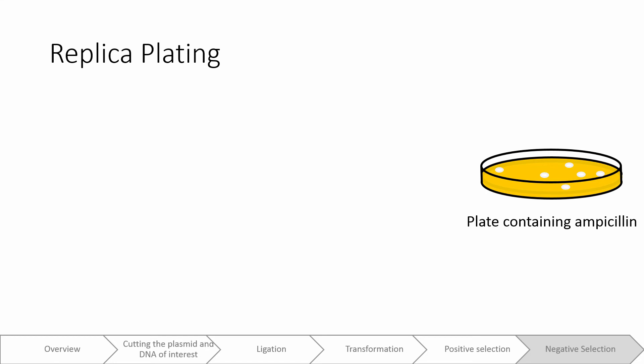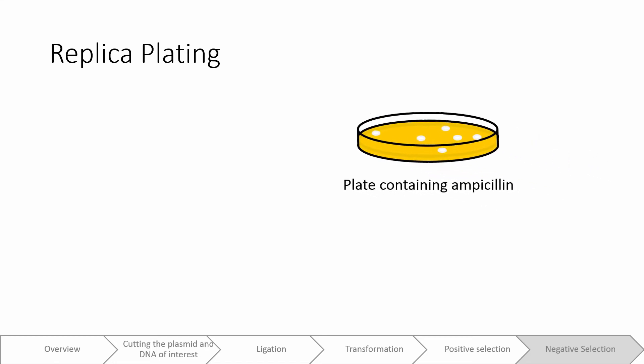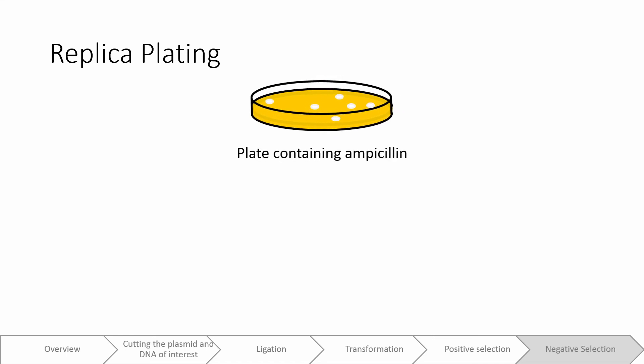To solve this problem, we perform something known as replica plating. This involves taking the surviving bacterial colonies and spotting them on two brand new plates, but in a special way. Each spot on the original plate is placed on the two new plates in exactly the same relative position. A mark can be placed somewhere on the plate so that the relative positions on the plates can be determined. For example, I would take this spot on the original plate and transfer it to the first new plate at this position.